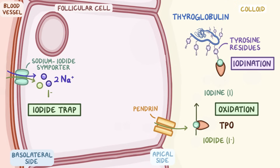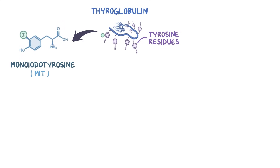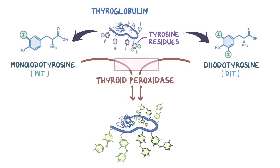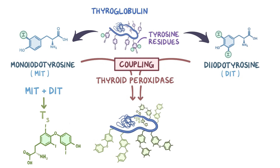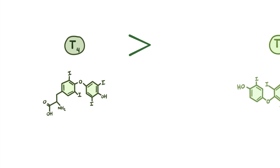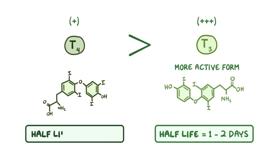The organic iodide then binds to the tyrosine in thyroglobulin — this step is known as iodination. Some tyrosine residues bind to only one iodine to form monoiodotyrosine, or MIT, whereas others bind to two iodine atoms to form diiodotyrosine, or DIT. These molecules are then coupled together by thyroid peroxidase — this process is known as coupling. Coupling one MIT with one DIT creates T3, while coupling two DIT molecules creates T4. T4 is generally created in greater amounts than T3, with T3 being the more active form with a half-life of 1–2 days, while T4 is less active but has a longer half-life of 6–8 days.